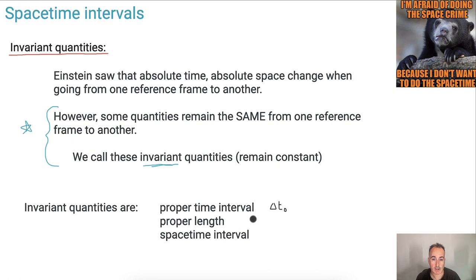We've got proper length, which is just L₀. And now we've got this new one, this idea of spacetime interval, which we're going to call delta S. This right here is going to be the new one.